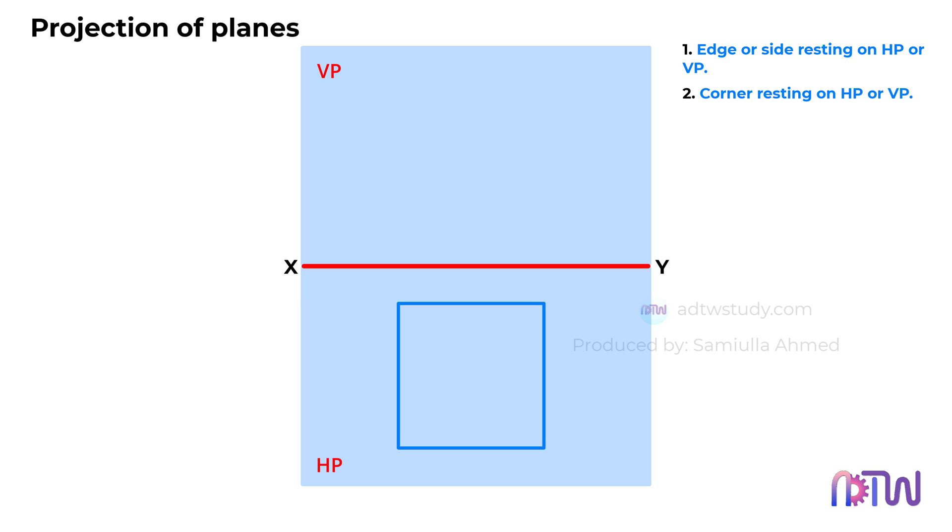Corner resting on HP or VP. If the question specifies that a corner of the plane is resting on the HP or VP, the orientation should be adjusted so that one of the corners points to the left side, as illustrated here.